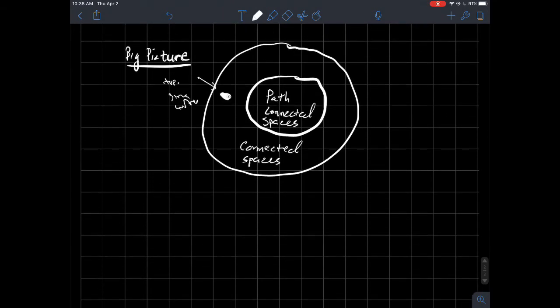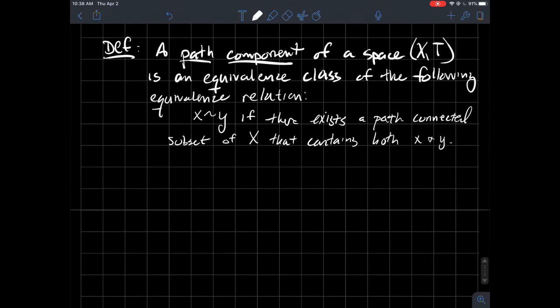So to continue. I've got to erase some of this stuff here. All right. The next definition that we need, that we care about for right now is what's the idea of a path component in a space?